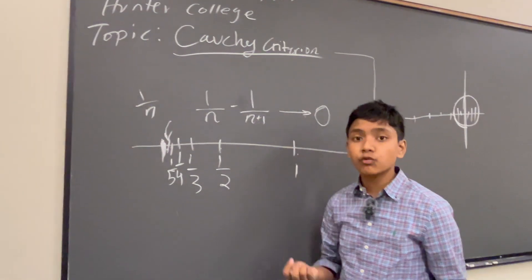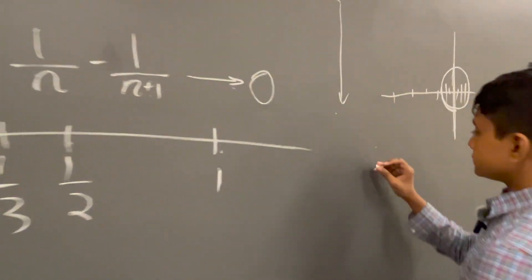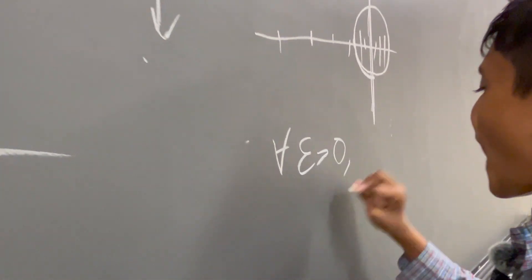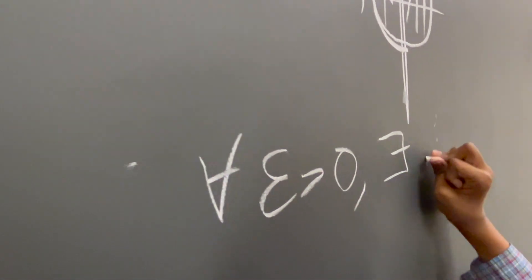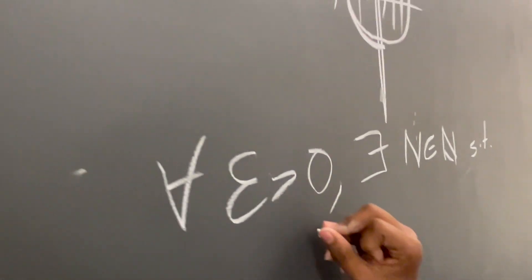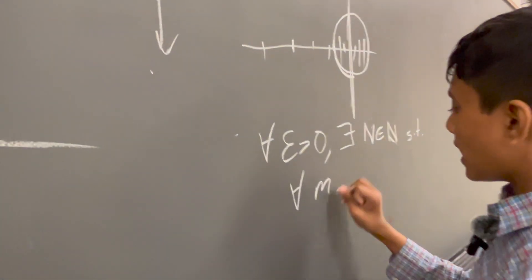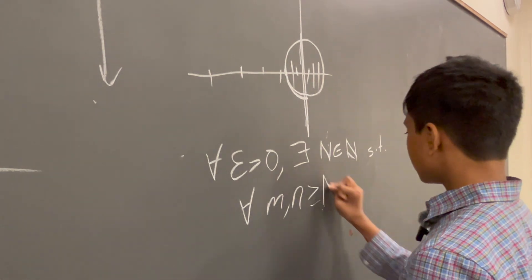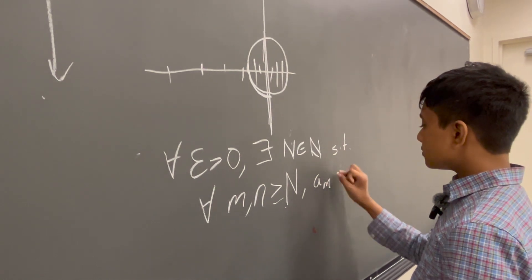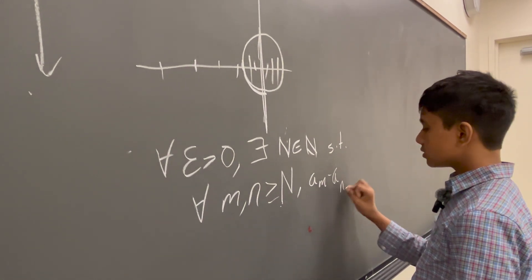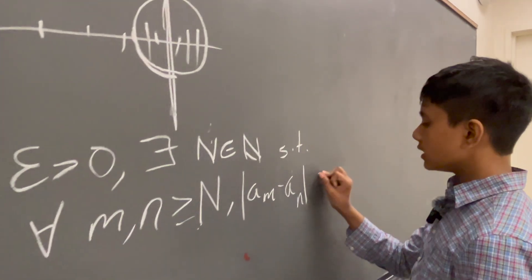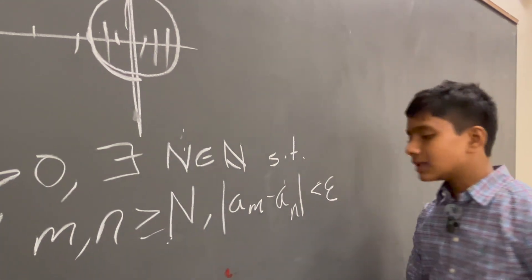So how do we formalize that notion? For all epsilon greater than zero, there exists a natural number capital N, such that for all m, n which are greater than or equal to N, |a_m − a_n| is within this epsilon neighborhood — in other words, less than epsilon.